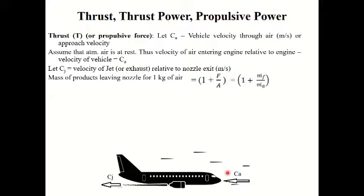The vehicle is moving with velocity CA, and if we assume that the air is stationary, then air is also entering this aircraft with the velocity CA. So instead of the aircraft moving with velocity CA, we may also assume that the air is entering this aircraft with velocity CA. Air is entering the aircraft — inside the aircraft there is an axial flow compressor, then turbine, then nozzle. Air enters the compressor with velocity CA. Assuming atmospheric air is at rest, the velocity of air entering the engine relative to the engine is equal to CA.